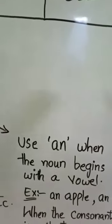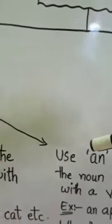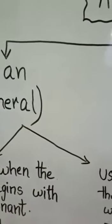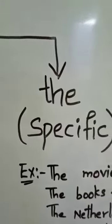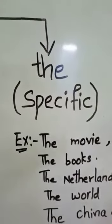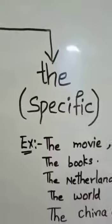Well children, so that was the usage of A and an. Now let us see usage of the. When do we use the? We use the for specific nouns. Alright children?